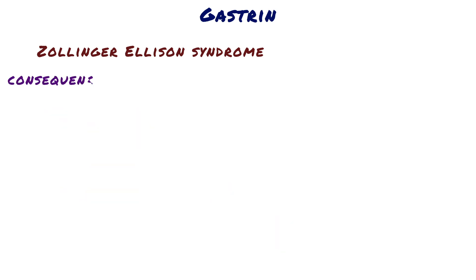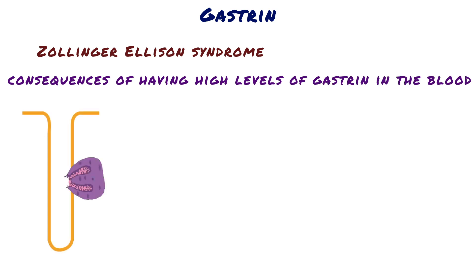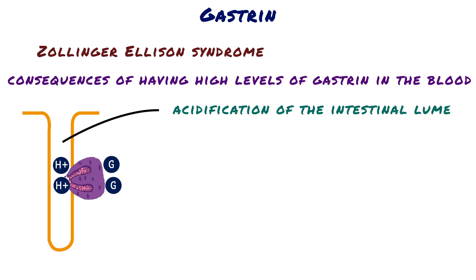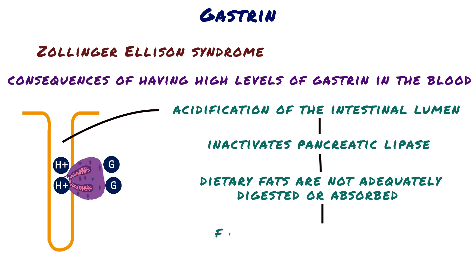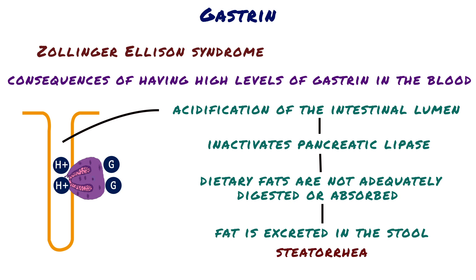One of the effects of gastrin is that it drives gastric acid secretion, so excess gastrin causes excess gastric acid production. The increased hydrogen secretion results in acidification of the intestinal lumen, which inactivates pancreatic lipase, an enzyme necessary for fat digestion. As a result, dietary fats are not adequately digested or absorbed, and fat is excreted in the stool — a condition called steatorrhea, which is the excretion of abnormal quantities of fat with the feces owing to reduced absorption of fat by the intestine.